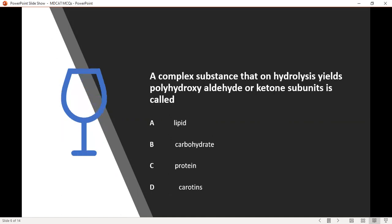A complex substance that on hydrolysis yields polyhydroxy aldehydes or ketone subunits is called option A lipids, option B carbohydrates, option C proteins, and option D is keratin. Here, the correct answer is B carbohydrates.